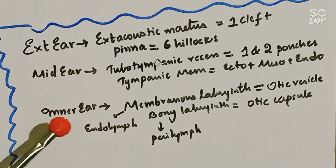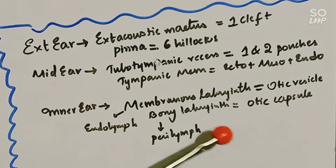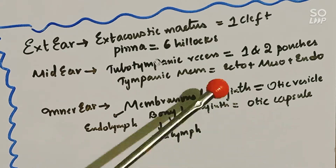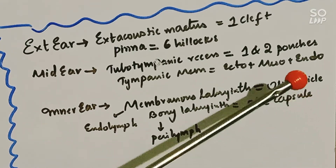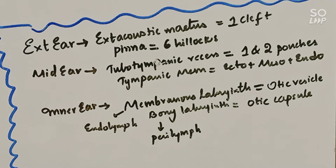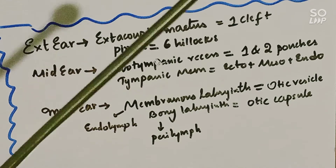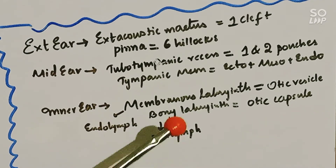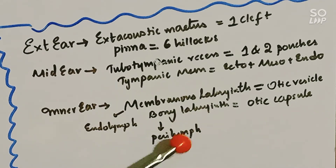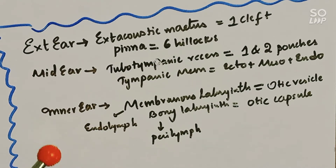Next, let us learn about the inner ear. The inner ear has the membranous labyrinth and the bony labyrinth. The membranous labyrinth is formed from the otic vesicles. The bony labyrinth is formed from the otic capsule, surrounding the membranous labyrinth. It contains the perilymph, and the membranous labyrinth contains the endolymph.